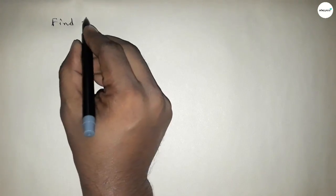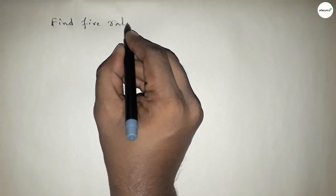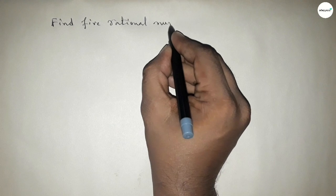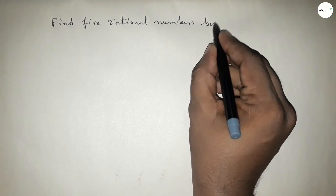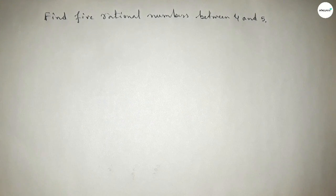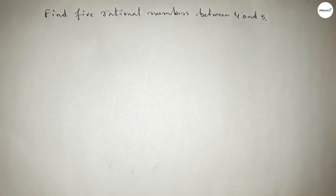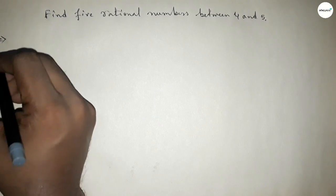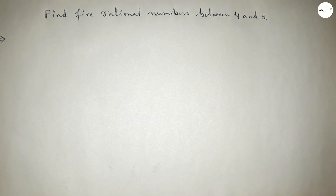Hi everyone, welcome to SSR Classes. Today in this video we have to find five rational numbers between four and five. Let's start.